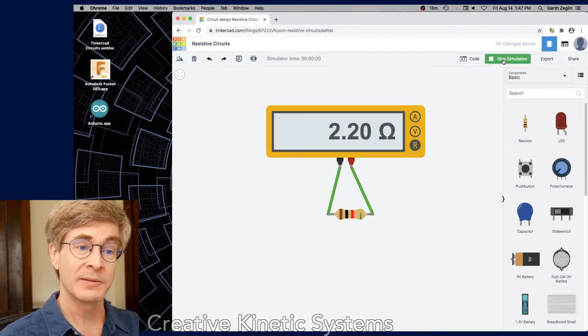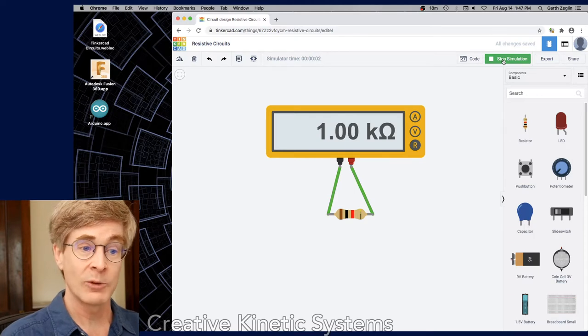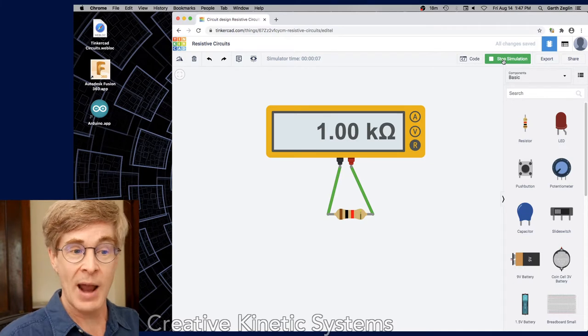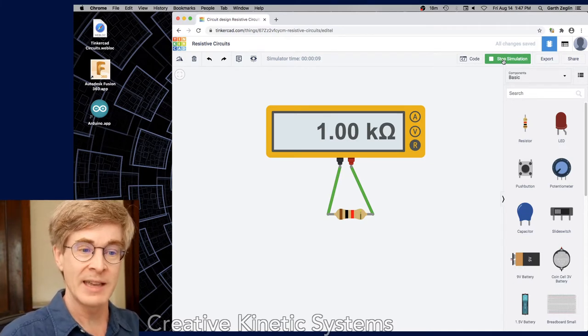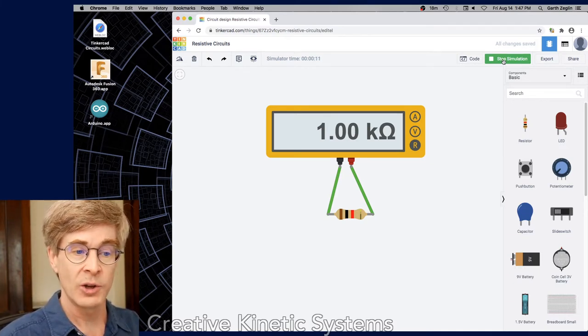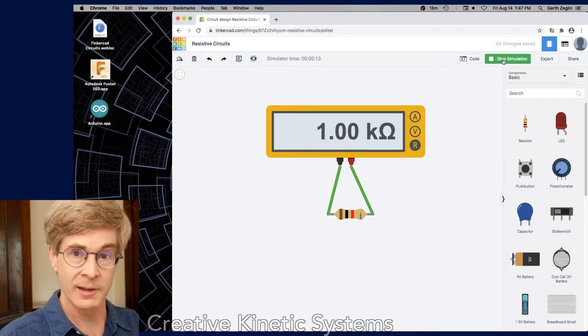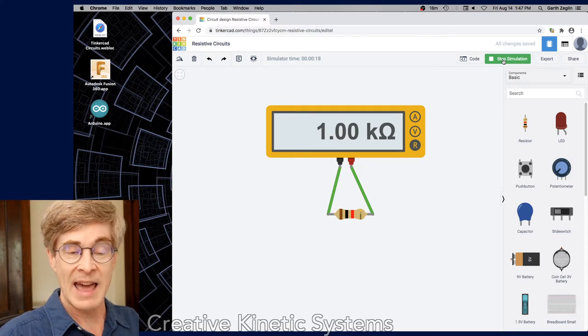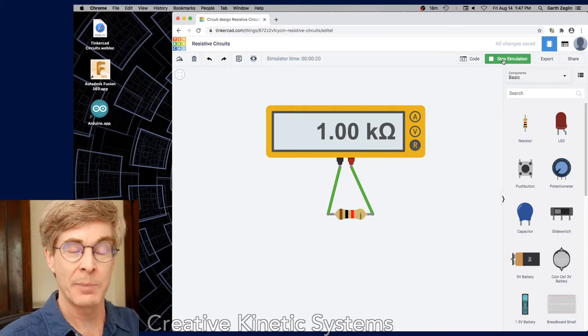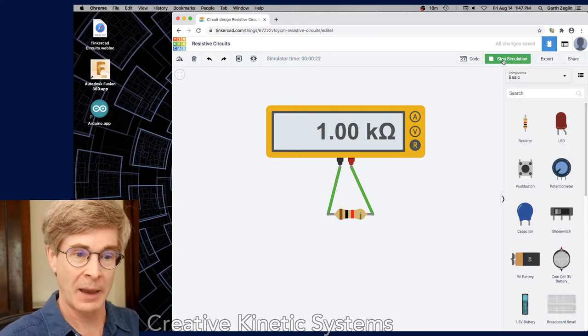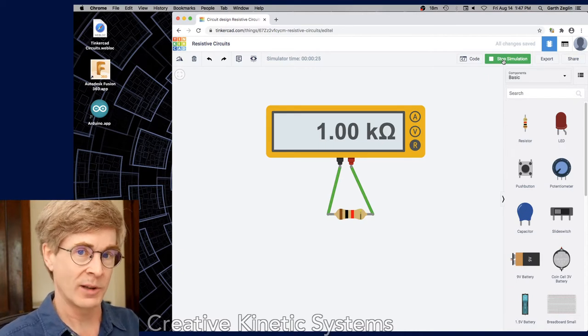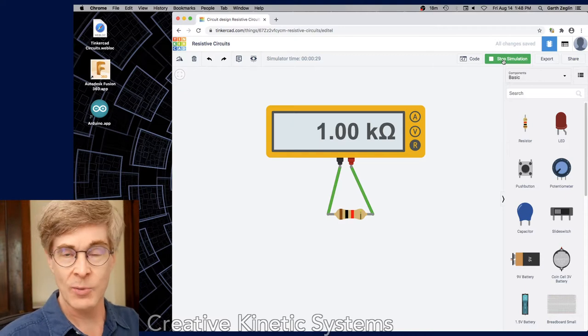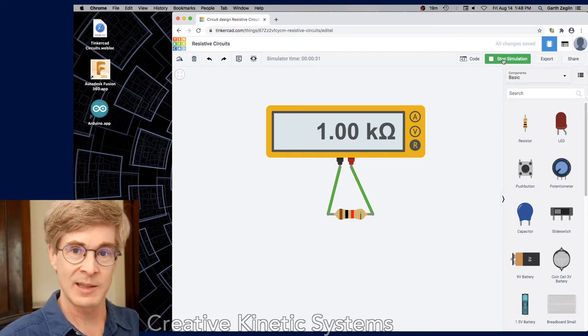If I start the simulation, it doesn't do much, it simply reads a value, 1.00 kiloohms, 1,000 ohms. In practice with a real voltmeter, what's happening is it's sending a small current through some circuit, in this case the single resistor, and measuring the voltage that develops across it. That is an active process where it actually applies a little energy to something to measure it. So generally we only use this on an isolated component or an isolated circuit and not on a powered circuit.